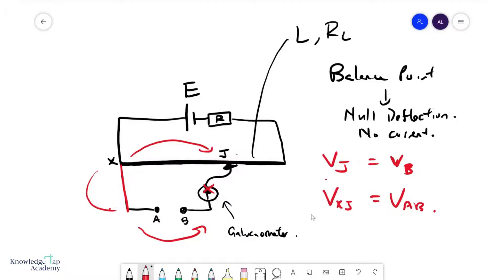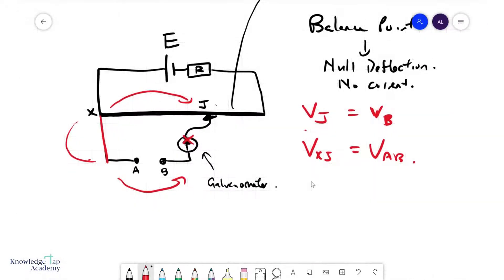What we then do from here, because there is no current here there must also be no current here, I can essentially draw a line across like so and study the bottom circuit and the top circuit separately. The goal typically is to find the potential difference ab, which could be anything you're trying to measure.